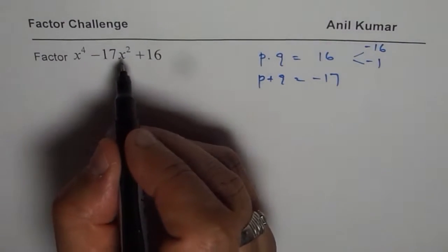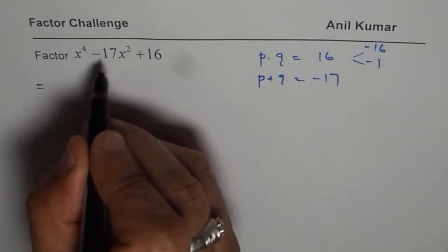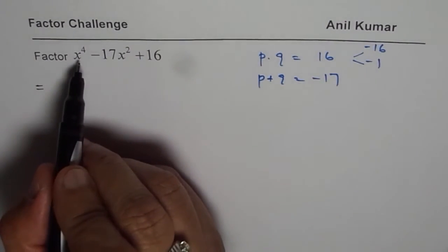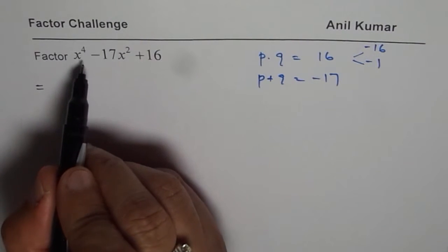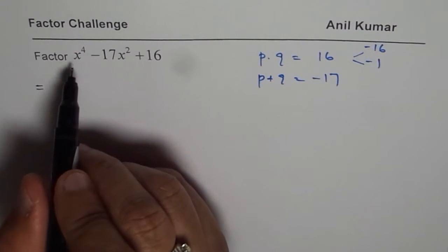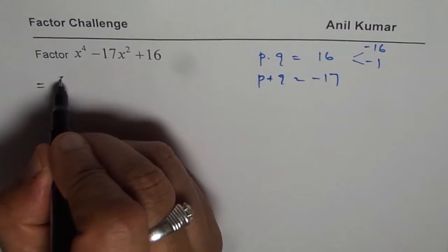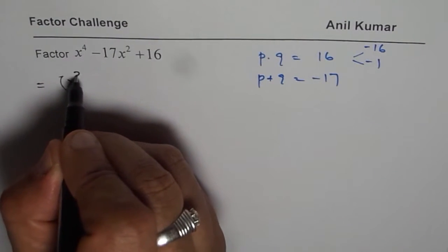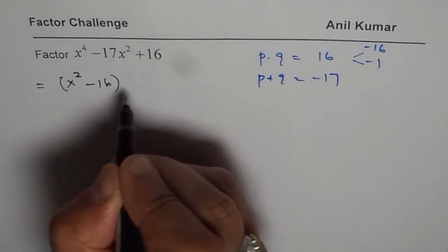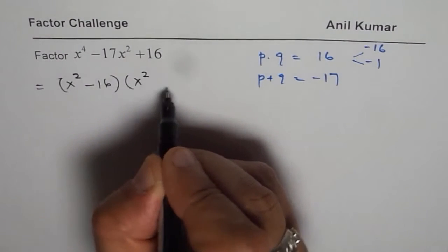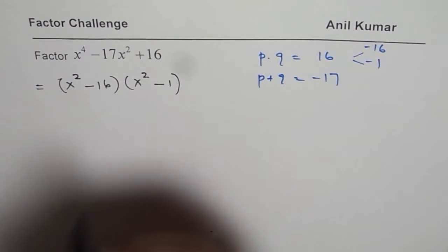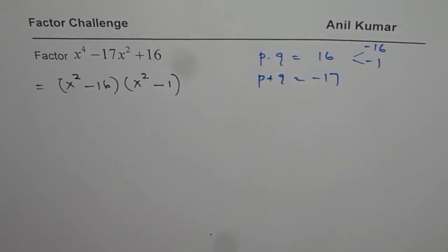And therefore we could write this trinomial as, now remember this is x to the power of 4, right? So it is not x squared. Therefore, now the factors will be x squared minus 16 times x squared minus 1. I hope that step is absolutely clear.